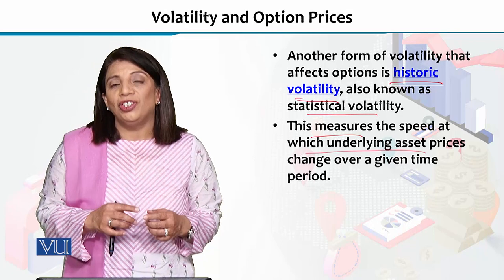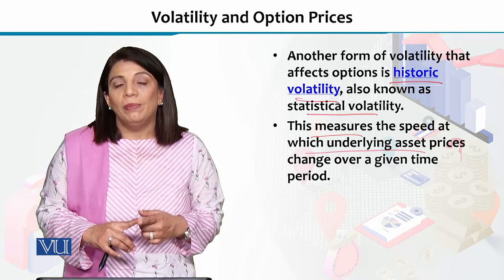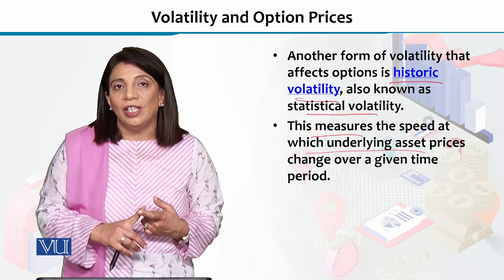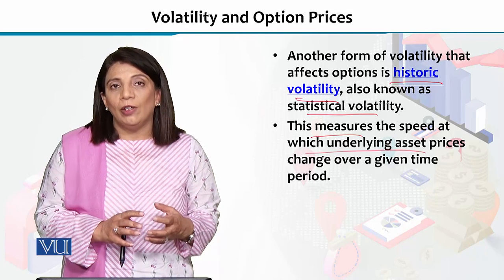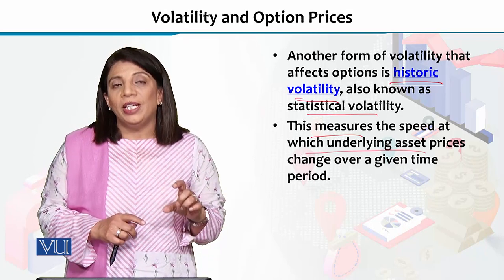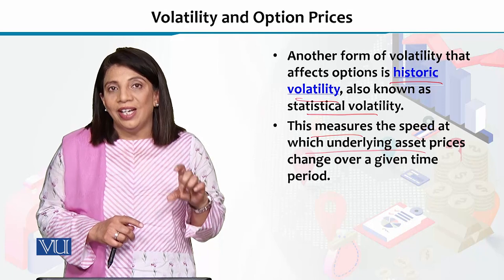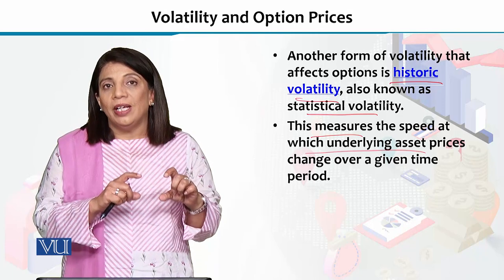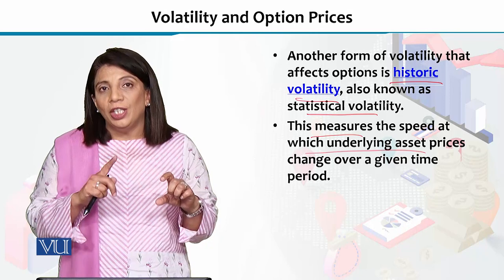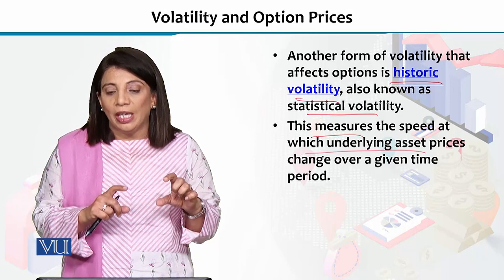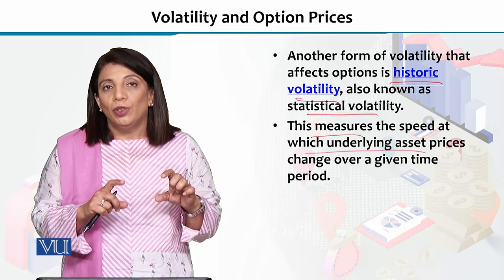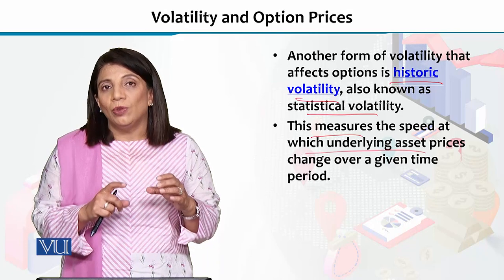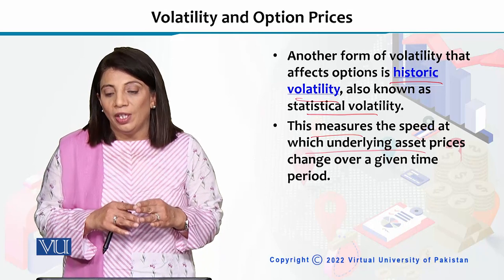Aap dekhte hain ke pichle 6 mahine mein, pichle 1 mahine mein, pichle 15 din mein, pichle 1 hafte ke andar, ya pichle 2 saalon mein — kis speed ke saath, kis rate ke saath kiemte of a certain asset increase or decrease hui hain. Woh particular cheez aapko jo volatility ka mair batati hai, that is known as the historic volatility.